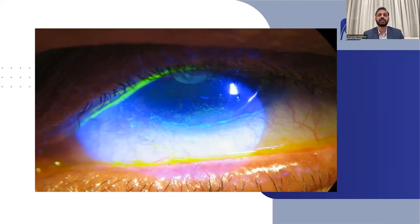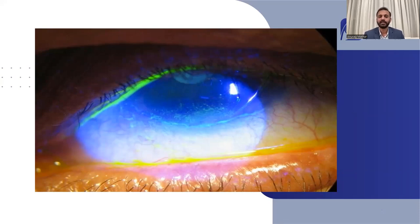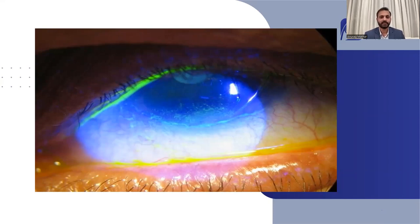This condition is called conjunctivochalasis — that means extra skin. It is not conjunctivitis; it is physically extra conjunctiva folding on itself, causing pooling of inflammatory tears and leading to all these signs. The treatment is very simple but it cannot be cured by drops, antibiotics, steroids, or lubricants. You need to excise this extra conjunctival fold — that is the only cure. But this patient was being treated for conjunctivitis for a very long time.